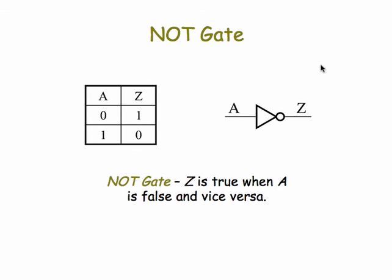Finally, we have another basic electronic component, the NOT gate. The NOT gate simply reverses its input. If the input is false, it makes it true. If it's true, it makes it false.